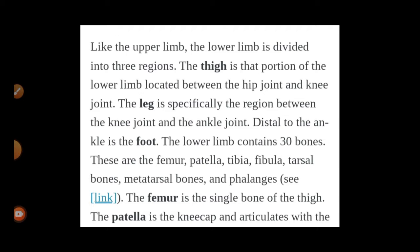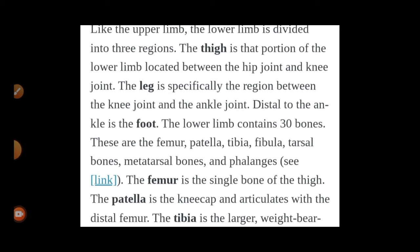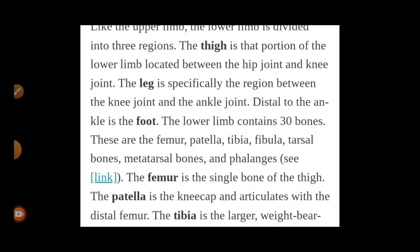For the lower limb, the joint is the hip joint and the pelvic girdle. The first region is the hip region, then the thigh. The thigh is the portion of the lower limb located between the hip joint and the knee joint. The leg is the region between the knee joint and the ankle. The ankle leads to the foot.